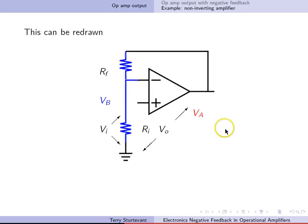So here we go again. Now this can be redrawn. Notice now I've called this VB, and the input voltage is between the non-inverting input and ground, and the output voltage is between the output and ground, and I've called this VA.